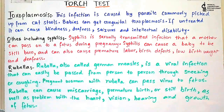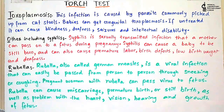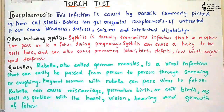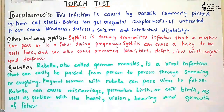R stands for Rubella, also called German measles, which is a viral infection that can easily pass from person to person through sneezing or coughing. Pregnant women with rubella can pass the virus to the fetus, which can cause miscarriage, premature birth, or stillbirth, and can cause problems with the heart, vision, hearing, and growth of the fetus. So until now: T is a parasitic infection, O is a bacterial infection, and R is a viral infection — showing that TORCH is a combination of parasite, virus, and bacterial infections.